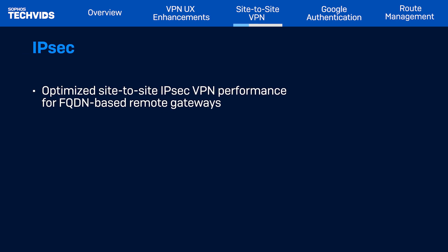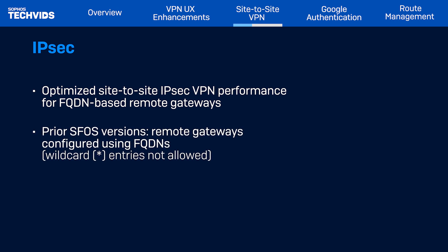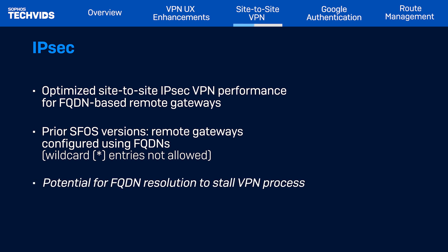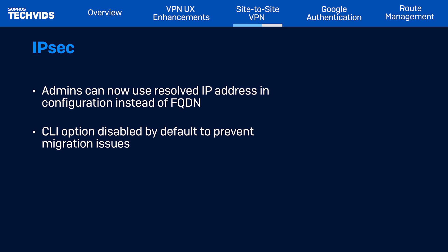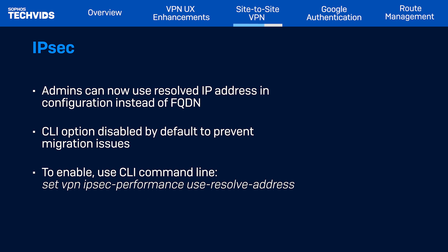We've also optimized IPSec VPN performance for FQDN-based remote gateways, enhancing distributed scalability. Previously, administrators had to configure the remote gateway using FQDNs, as wildcard entries were not allowed. In high DNS latency environments, FQDN resolutions could stall the entire VPN process, affecting other VPN connections. Administrators can now choose to use the resolved IP address in the configuration instead of relying on FQDN resolutions by the VPN service. This CLI option is disabled by default to prevent any unintended behavior changes during migration. To enable it, use the following command line in your console.